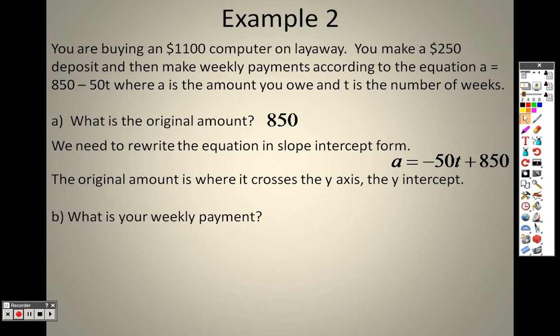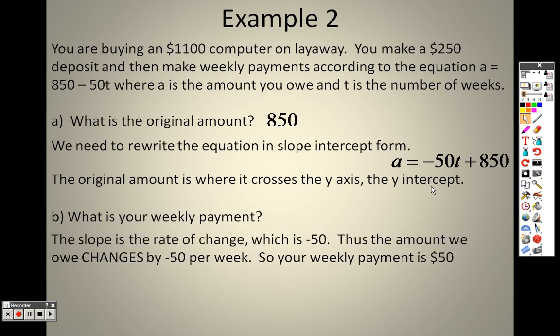Alright, so then what's your weekly payment? Well, that's your rate. Your rate right here is the slope, which is the $50. The slope is the rate of change, which is negative 50. Thus, the amount we owe changes by $50 per week. So your weekly payment is $50.